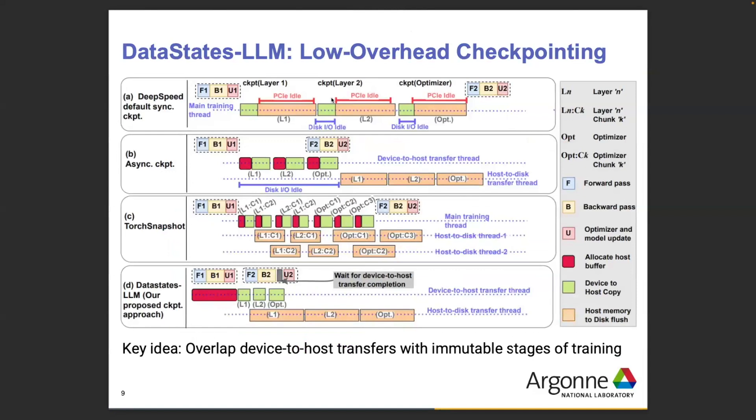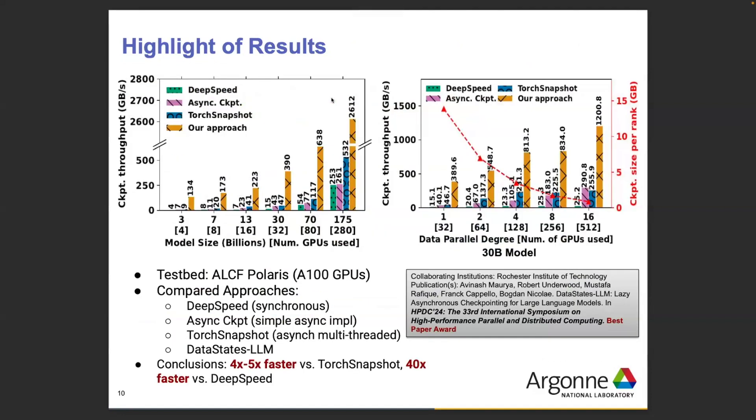We introduced the solution DataStates-LLM, which provides low-overhead checkpointing for large LLM models. Compared with DeepSpeed, which takes synchronous checkpointing, and other approaches that block until you create a copy from GPU to host memory and then to lower-level storage, our solution leverages the iterability of training to overlap the copy from GPU to host within the next iterations. This allows us to obtain much higher acceleration. The solution is scalable with the number of parameters.